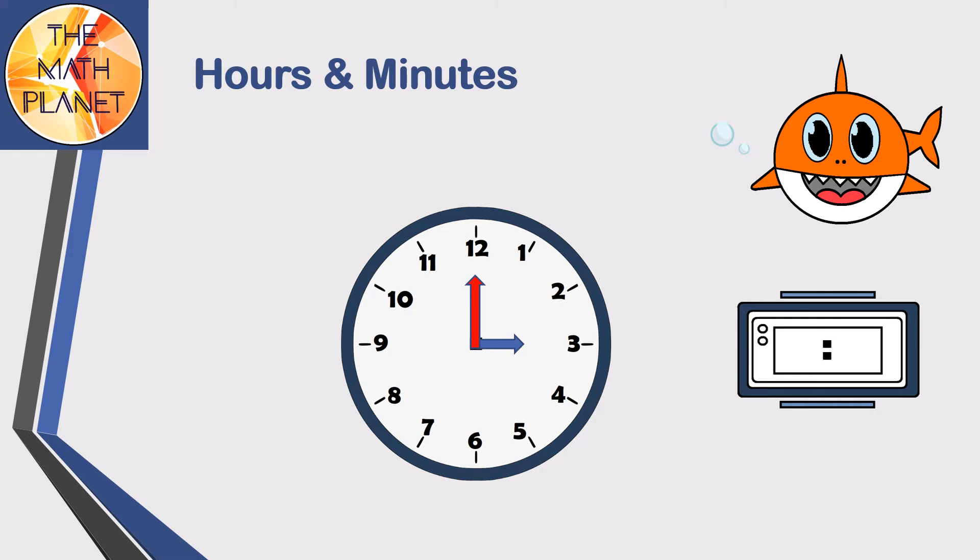For example, the hour's hand now points to 3, and the minute's hand points to 12. So, the time is 3 o'clock. When the minute's hand moves to 1, which is the next number, this means 5 minutes have passed, and the time will be 3:05.